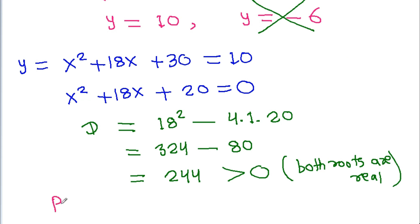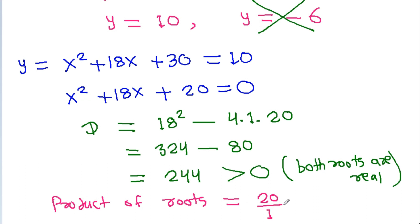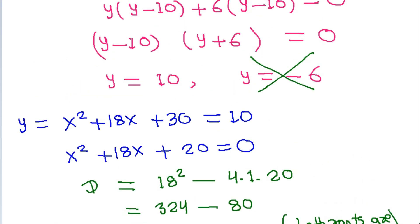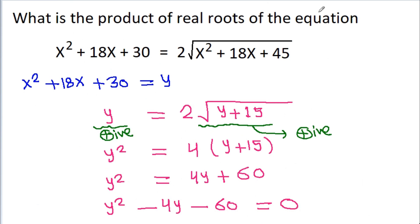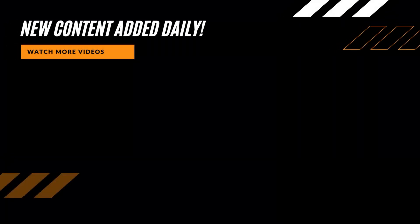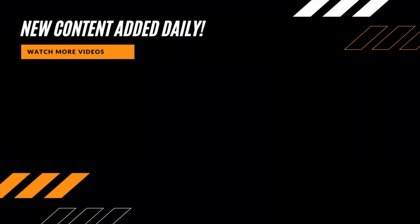So the product of the roots will be c/a, where c = 20 and a = 1, giving a product of roots equal to 20.